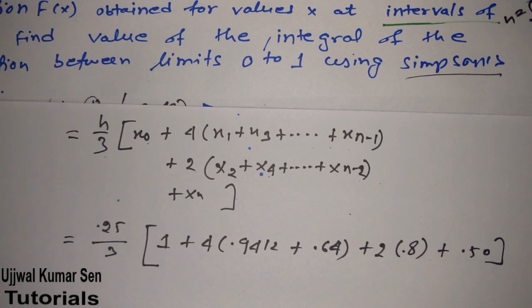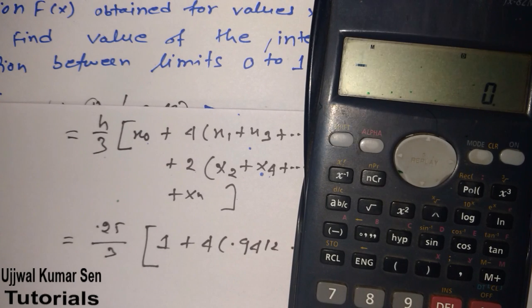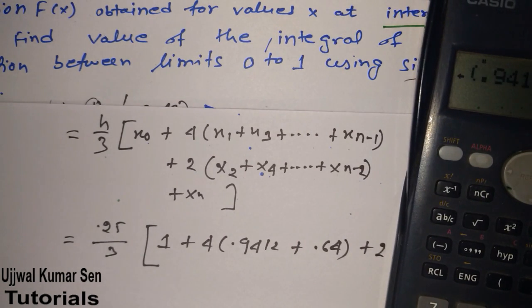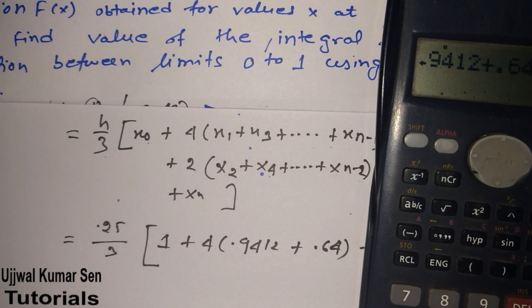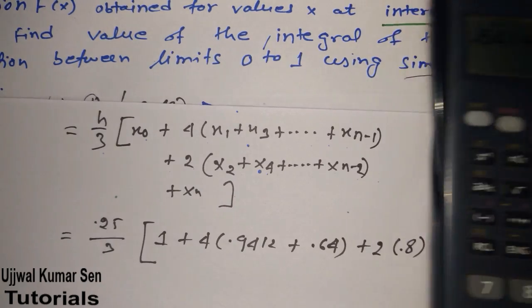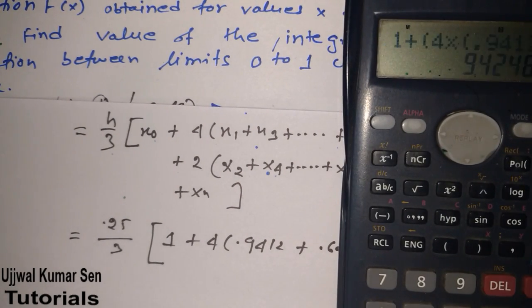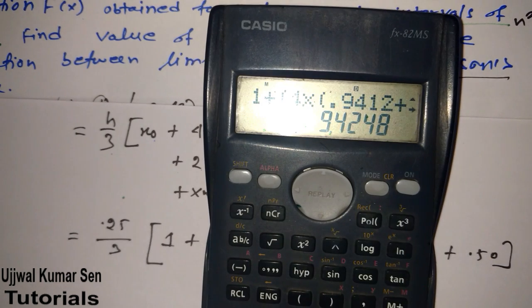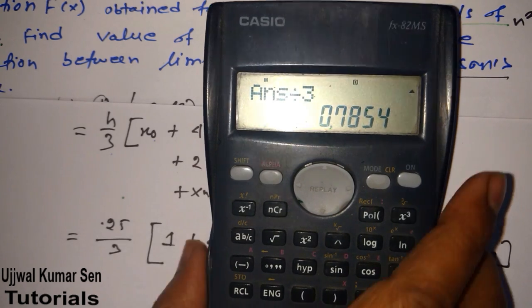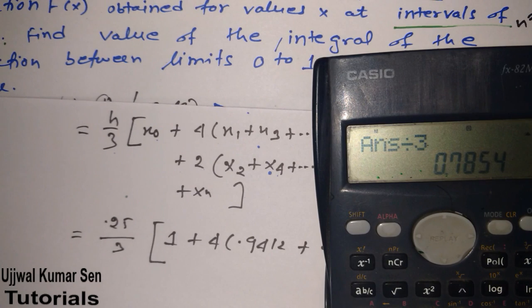Now we have to use the calculator. Let's use calculator: 1 plus 4 times 0.9412 plus 0.64 plus 2 times 0.8 plus 0.5. We are getting the value 9.4248 times 2.5 divided by 3. So the answer we are getting here is 0.7854.